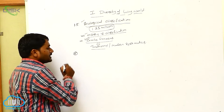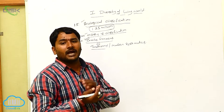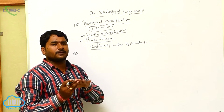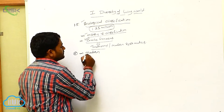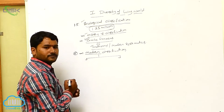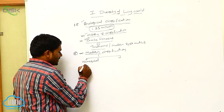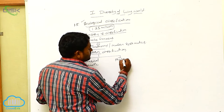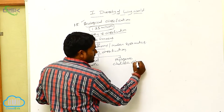There are different types of classifications: natural classification and artificial classification. In the modern classification, there are two types: one is numerical classification, also called phenetic classification, and the next one is phylogenetic classification, also known as cladistic classification.